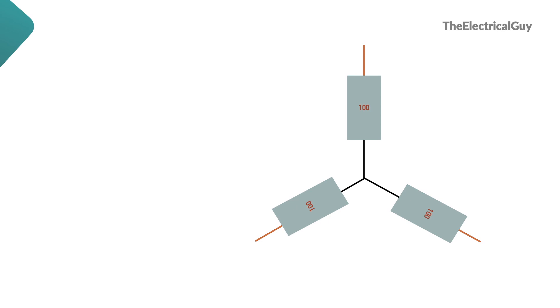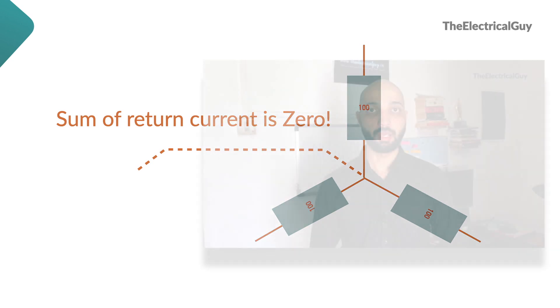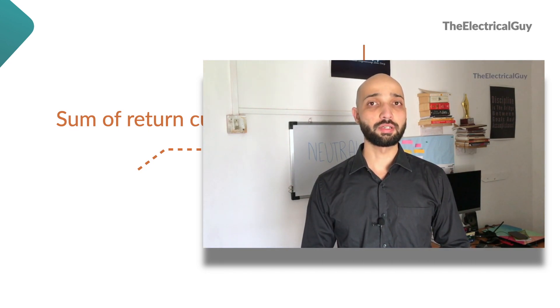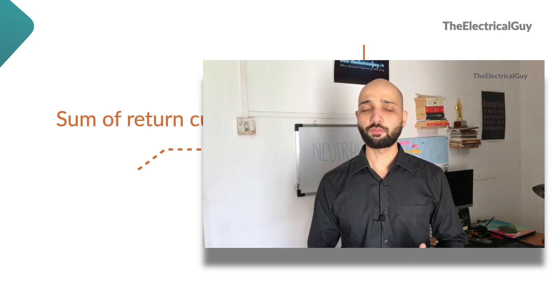We know that when the load on the system is balanced, sum of the return currents of all three phases is zero. Hence, current flowing through the neutral conductor is also zero at every instance. This we learned in detail in the video where I explained if we can remove the neutral wire. If you haven't watched it, I'll give the link down in the description. It will help you understand this video more clearly.